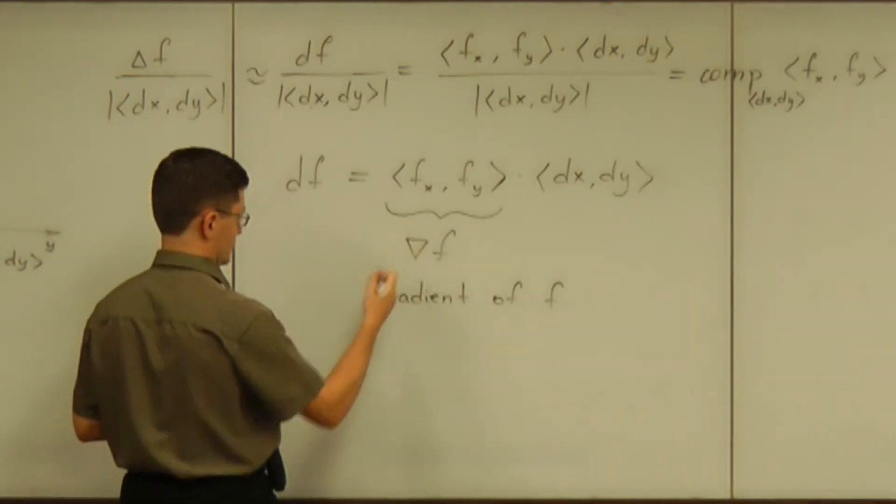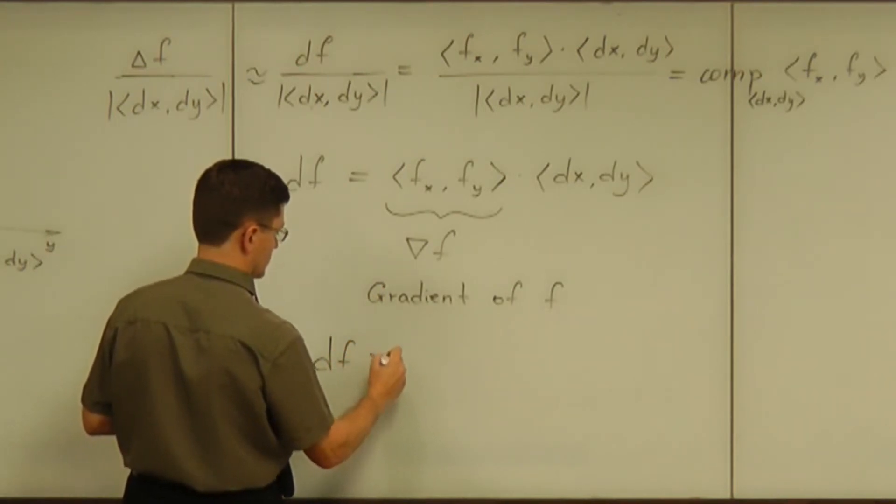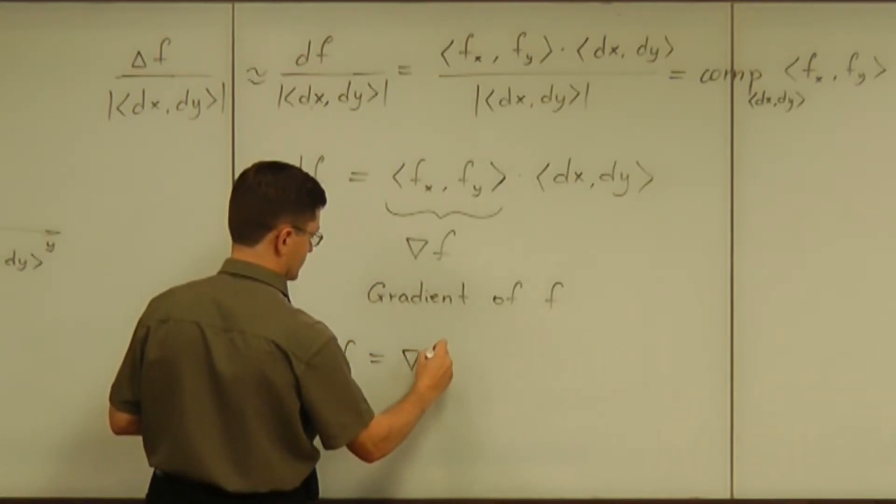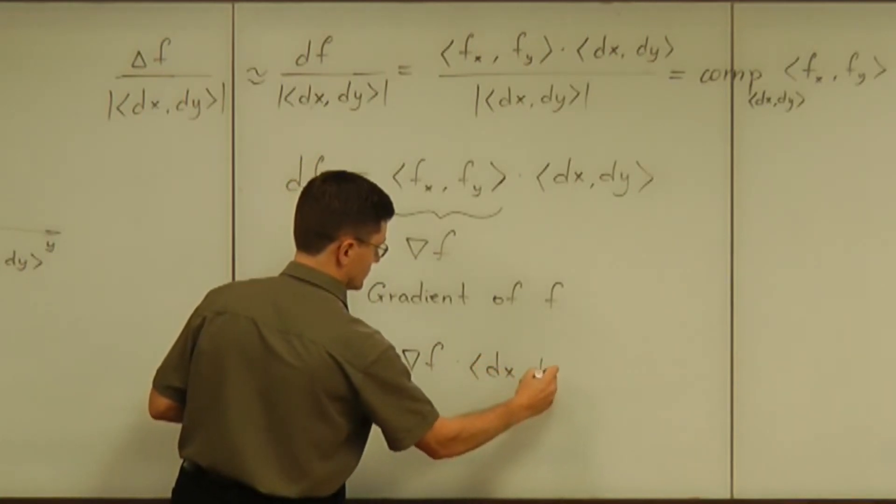And using that notation you can write the whole thing nicely: df is gradient of f dot product with dx dy.